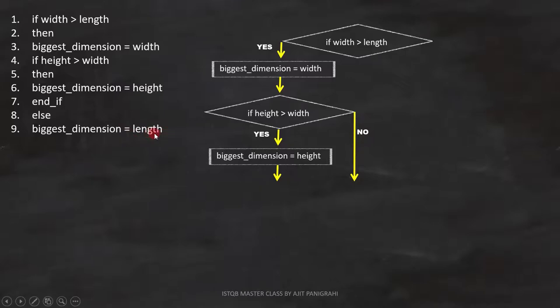Now let's see where to put it in the flowchart. If this condition is false, biggest dimension equals to length.